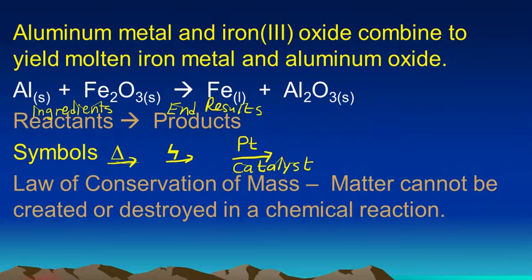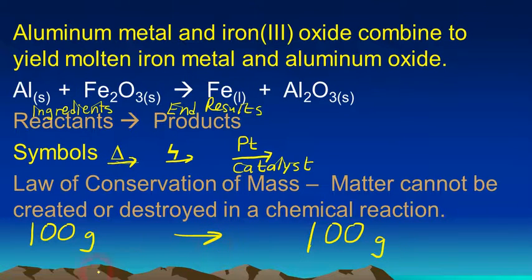Now, in chemical reactions, there is an important scientific law that governs how they take place, or it actually states what takes place, and it's the law of conservation of mass. And this law states that matter cannot be created or destroyed in a chemical reaction. So what that's telling us is if you start out with a hundred grams of reactants, you're going to end up with a hundred grams of products. That's the law of conservation of mass. We never destroy or create matter.